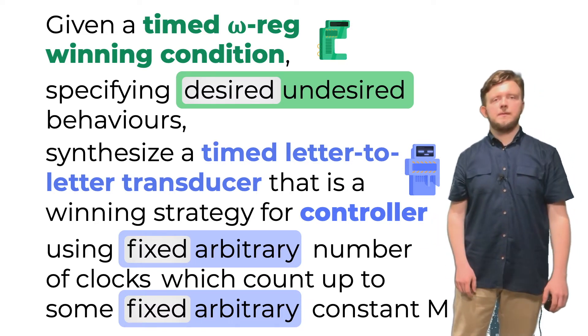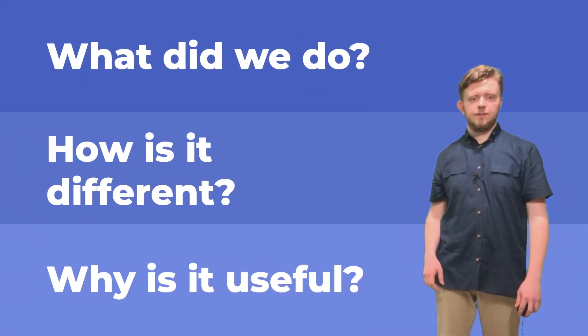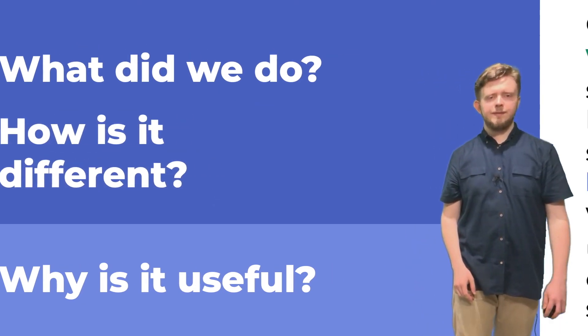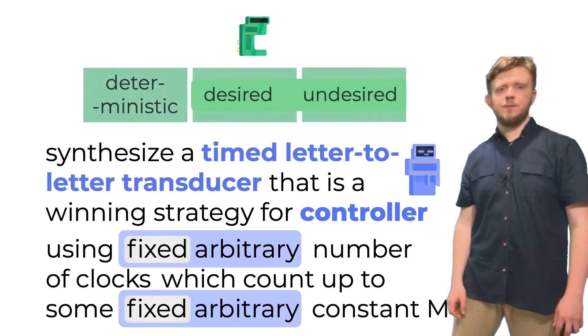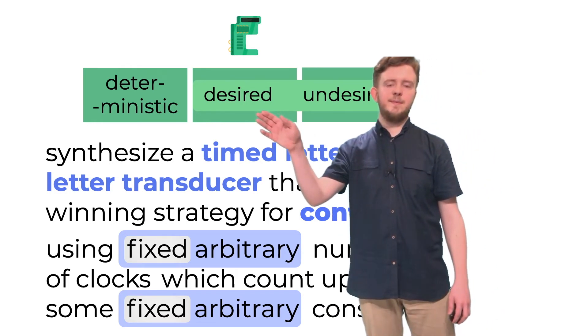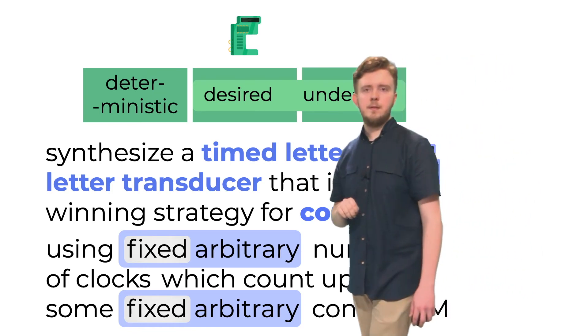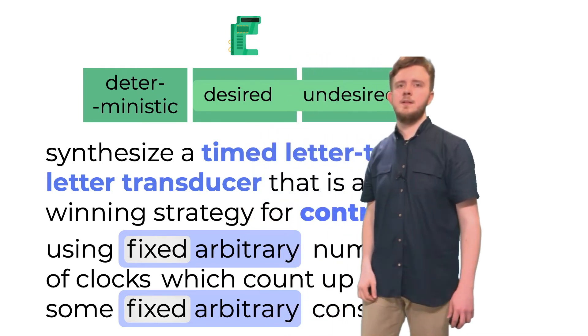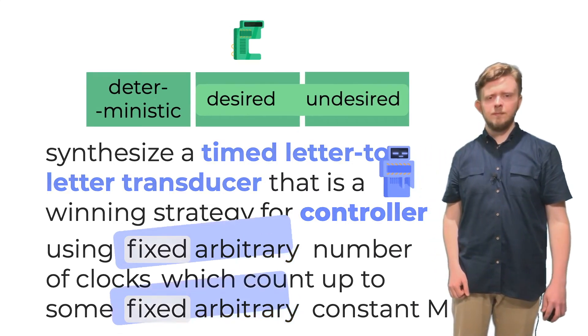Before I can tell you what is the set of choices that we made here, it is best to first show what has been known here before. So, in fact, the answers for those two questions now intertwine. Let us construct a table summarizing some of the possible choices here. As columns, we will have the type of the winning condition to be used, that is, with specifying desired or undesired behaviors of the controller. The additional column here, deterministic, is a simpler case because the deterministic timed automata can be complemented.